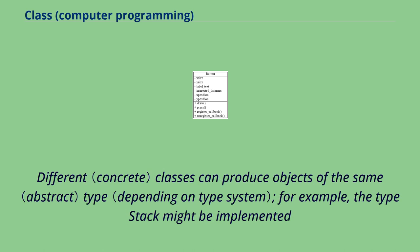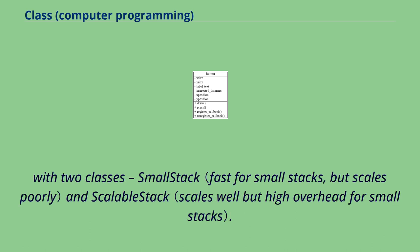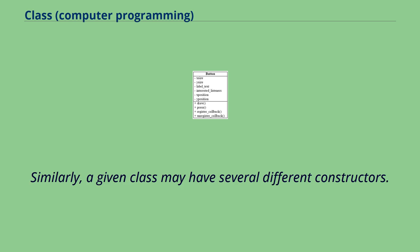Different classes can produce objects of the same type. For example, a type stack might be implemented with two classes: small stack and scalable stack. Similarly, a given class may have several different constructors.